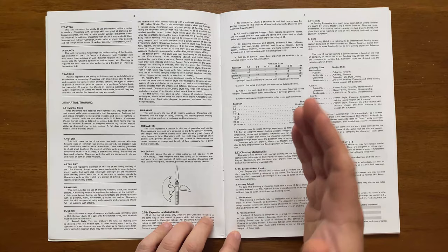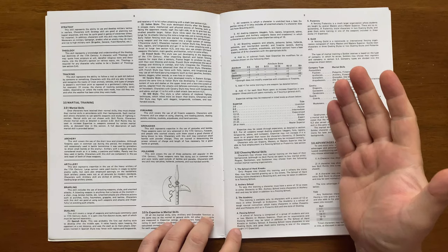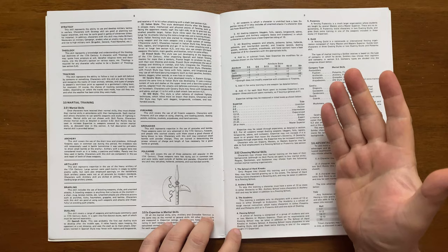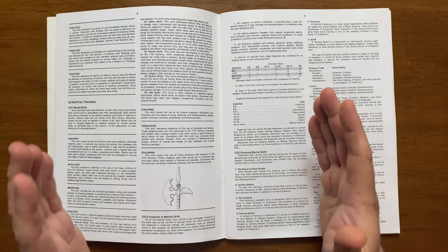After this we have the section martial training. We have the likes of archery, brawling and pole arms, and perhaps most important for this setting, dueling. Dueling covers the 5 styles: Spanish, Italian, French, cavalry and old style, and goes into the benefits that each style gives.